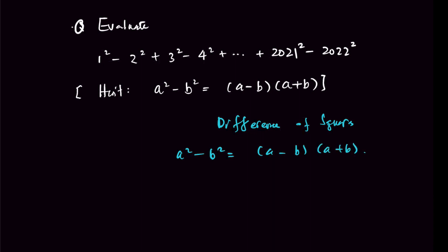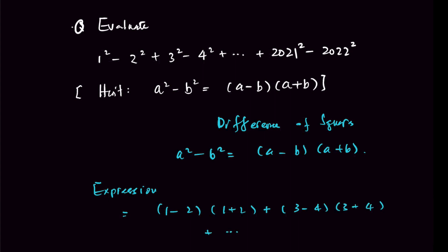The original expression equals (1 − 2)(1 + 2) + (3 − 4)(3 + 4) + ⋯. The beauty of this question is that we are getting −1 out of each difference, so we can factor out −1 from every term.